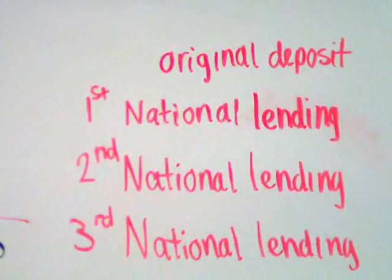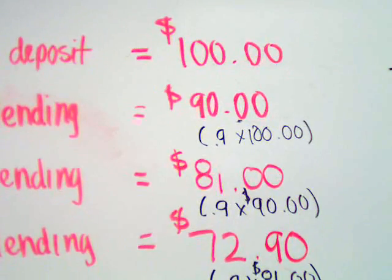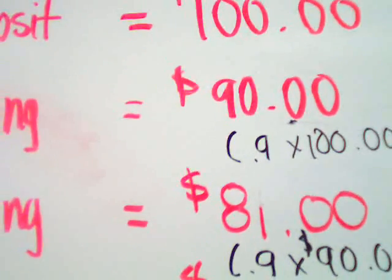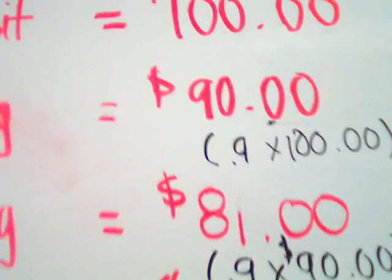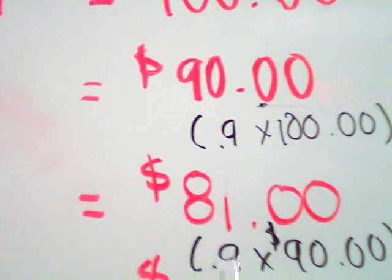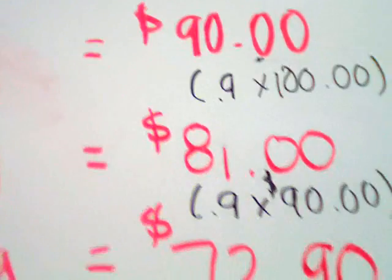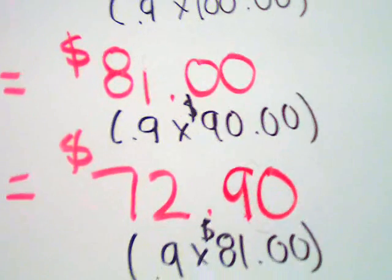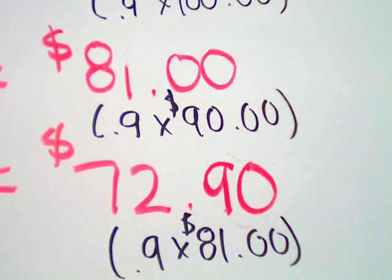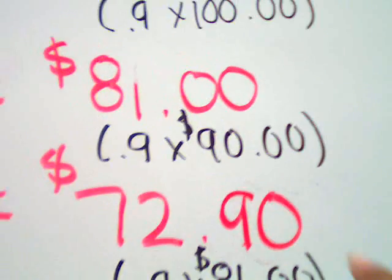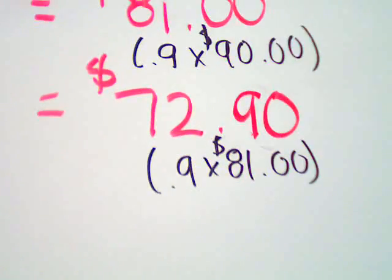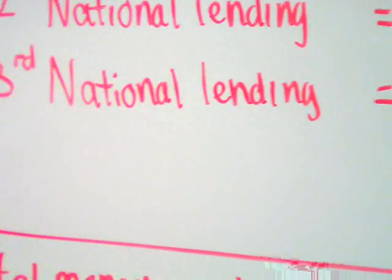Our original deposit was $100. First National Bank's lending was $90. That 90% comes from 100% minus the 10% held in reserve, so the money they can loan out is 90% of that $100, which is $90. Second National Bank can loan out 90% of the $90 — since that 10%, or $9, had to be kept in reserve — which gives $81. And the same logic applies to the $72.90 for Third National Bank.